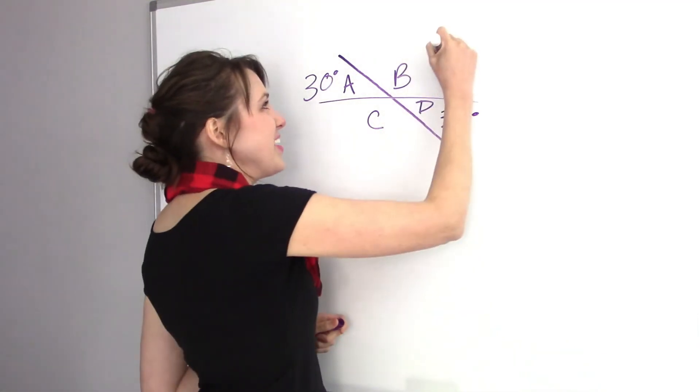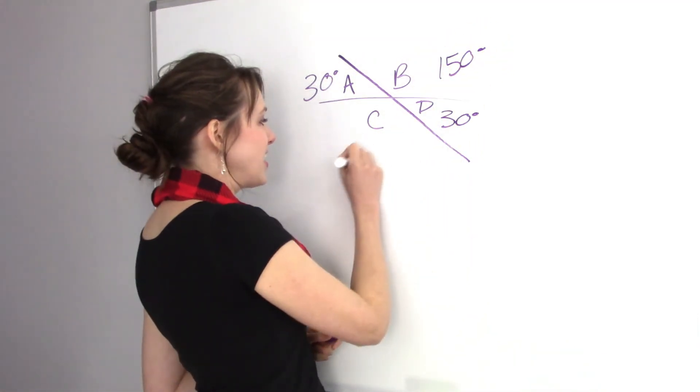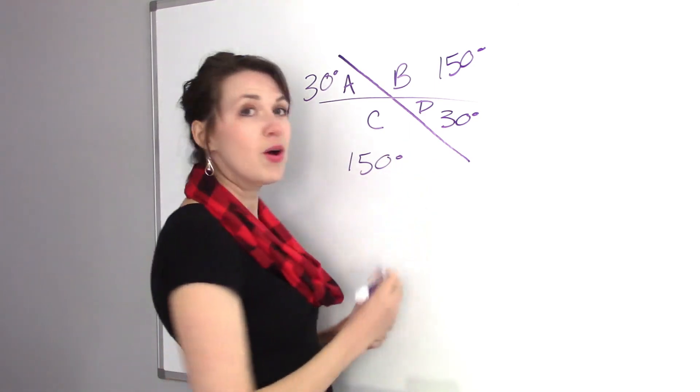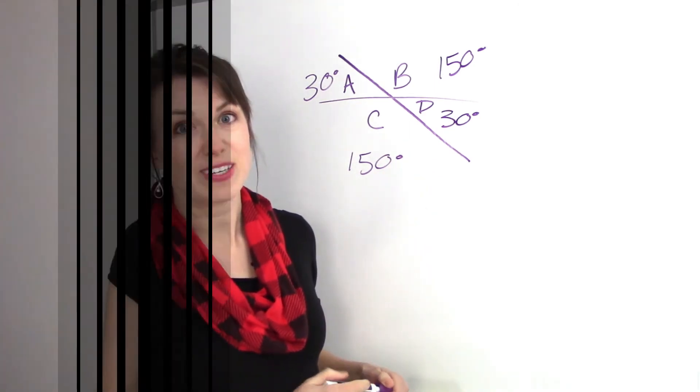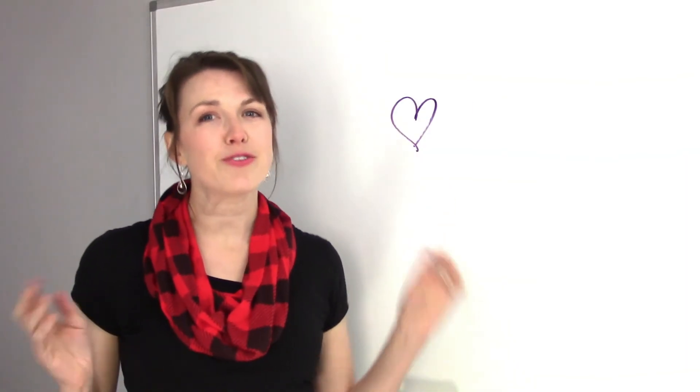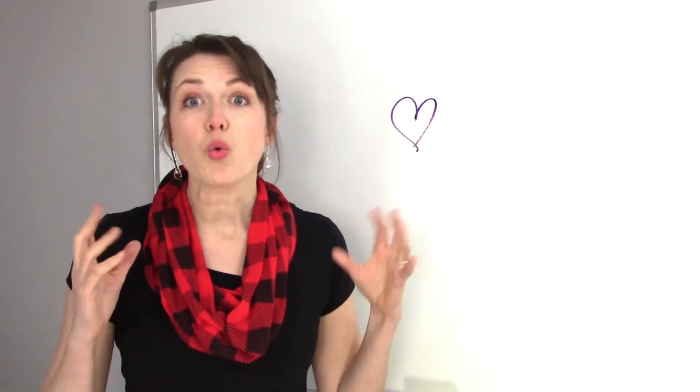And A plus B is 180. So what is 180 minus 30? That's right. 150 degrees, which makes C also 150 degrees. So I hope after this video, you feel a little bit more comfortable with angles: right, obtuse, and acute. Thank you for watching.